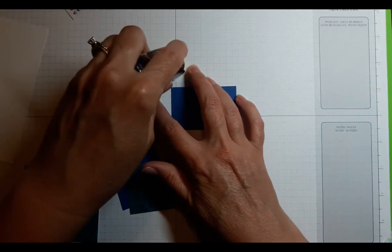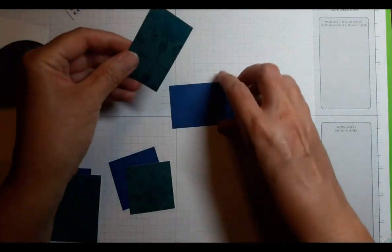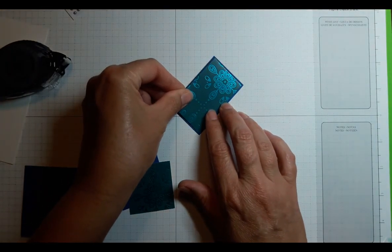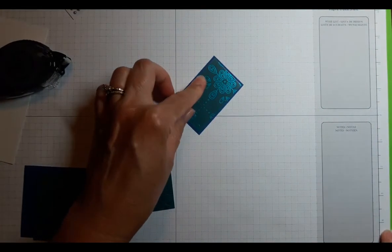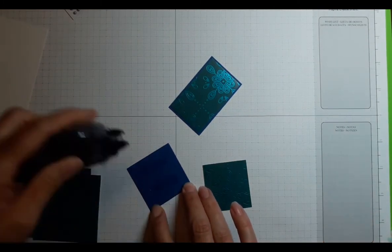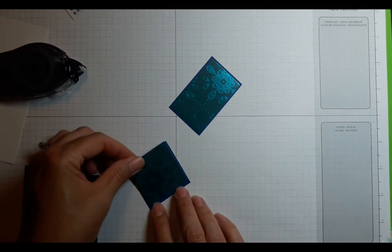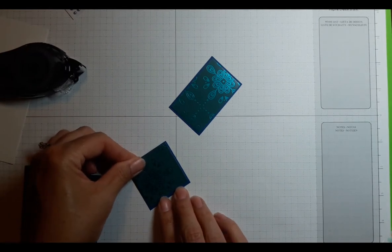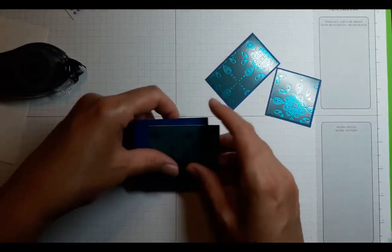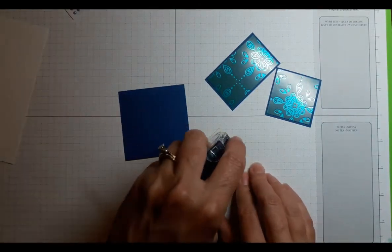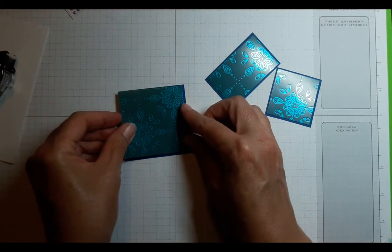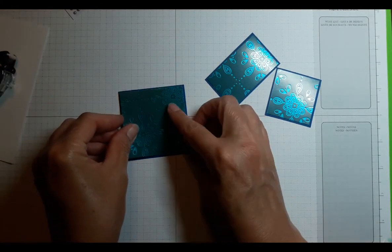For this card we are really showcasing the designer series paper that is the focal point of the card and we are just layering it on some coordinating cardstock. As you're cutting up any of your designer series paper you want to take a look at the images that may not be exactly centered in the paper because these pieces are going to overlap, you just choose the parts that you like best to be in the forefront.